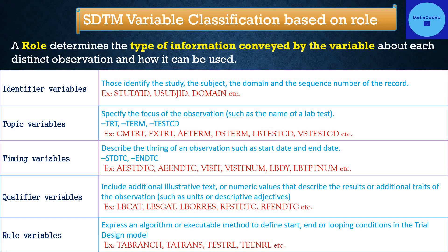Examples of topic variables by domain: for CM domain it's CMTRT, for EX domain it's EXTRT, for AE domain it's AETERM, for LB it's LBTESTCD, and for vital signs it's VSTESTCD.